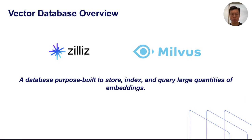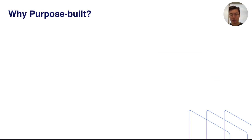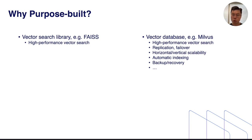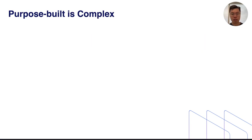So what is a vector database? A vector database is any database that is purpose-built to store, index, and search large quantities of embeddings. Milvus is a great example. Why create a purpose-built database? Vector search libraries like FAISS, HNSWlib, or ScaNN are great and give you high-performance vector search, but if you want traditional database features — replication, failover, automatic indexing — you have to have a purpose-built vector database like Milvus. It goes beyond what a pure library can provide.